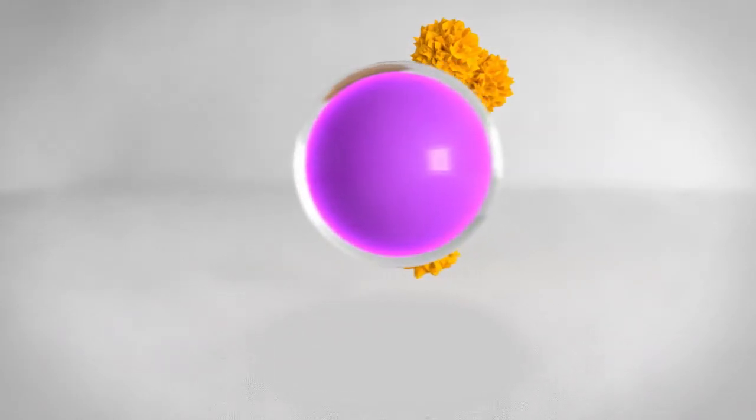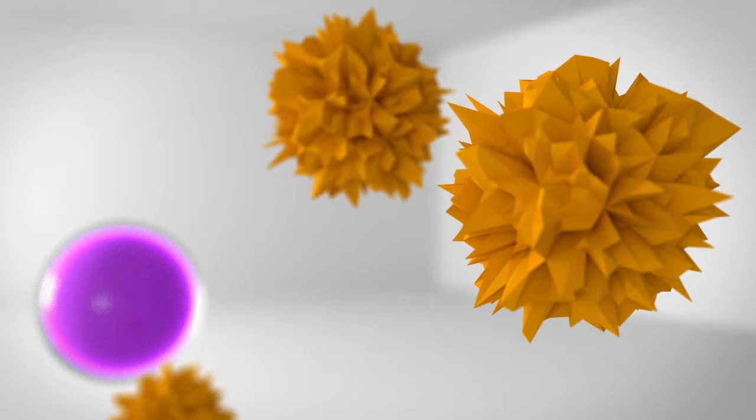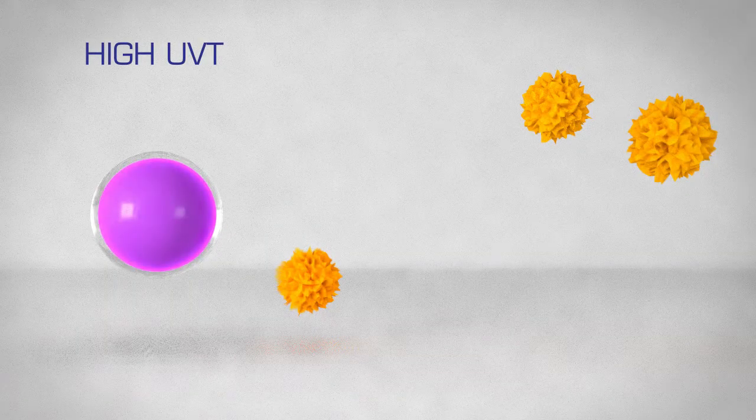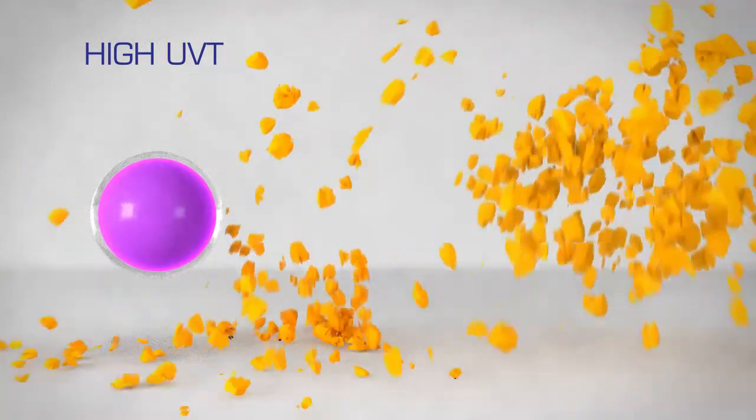Let's say that this is your ultraviolet water treatment system, and these are bugs in your water. If your UVT is high, it's easy for UV light to do its job.